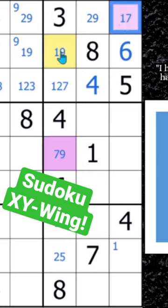If this is a 1, that'd be a 7. If this is a 9, that'd be a 7. So any cell that sees these two purple cells, you can eliminate a 7.